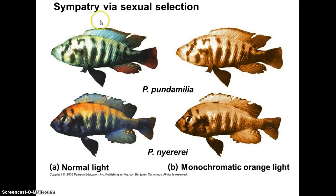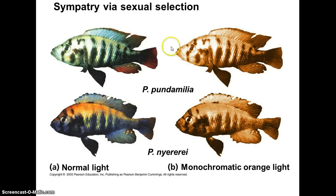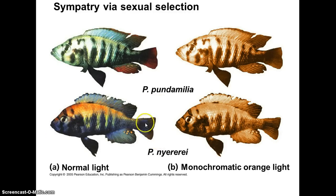These two separate species of cichlid fishes — these are the males. Under normal conditions, females of one type only recognize and mate with the males of their type. But when experimenters changed the light such that the colors of the males could no longer be differentiated, the females mated with either type — there was no mate selection. Essentially it's sexual selection driving these unusual color characteristics in males that reinforces the difference between these two species.